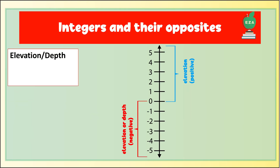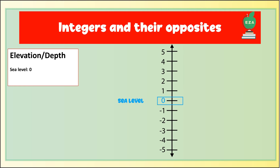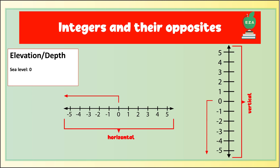Elevation refers to a location's height above or below sea level. Sea level is represented by zero on the number line. Numbers on the number line are considered negative when they are to the left of zero when drawn horizontally, or below zero when drawn vertically.